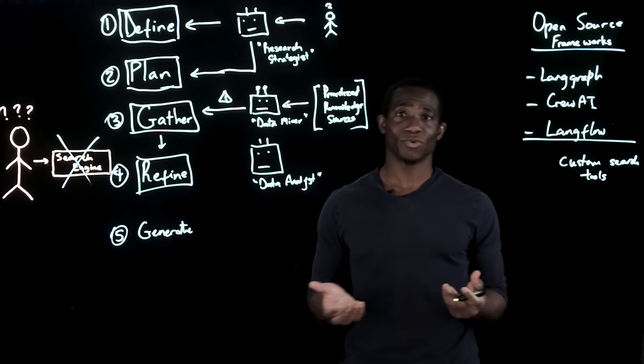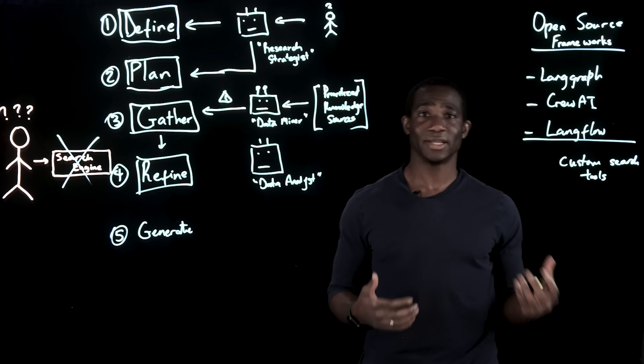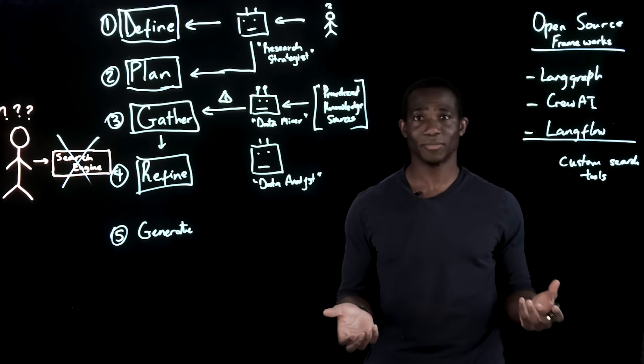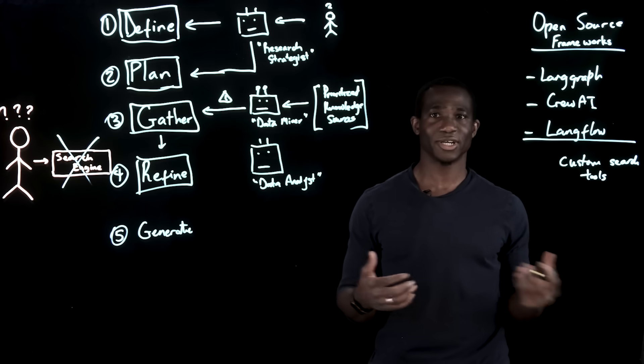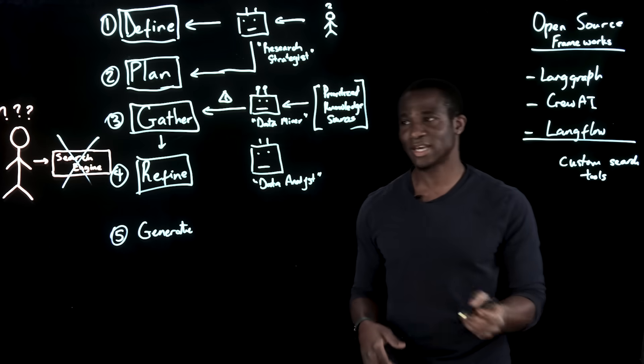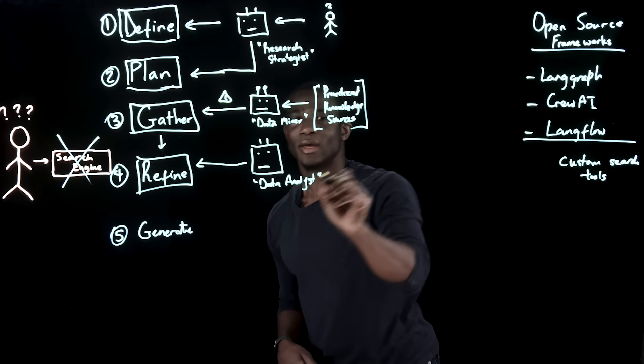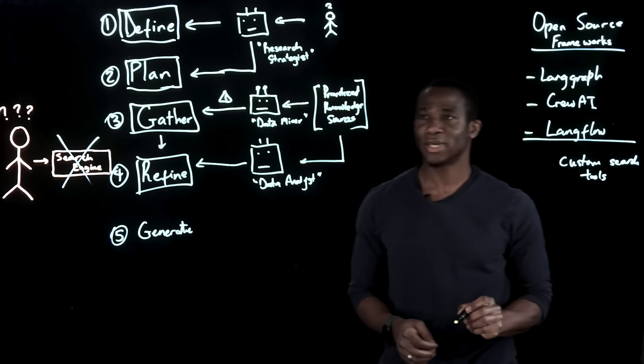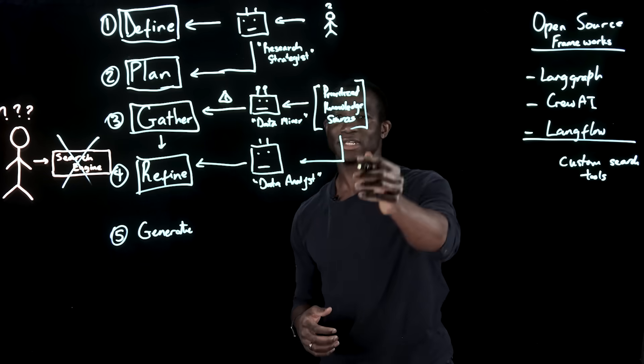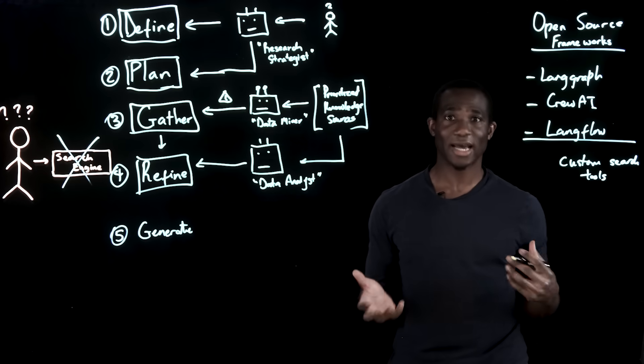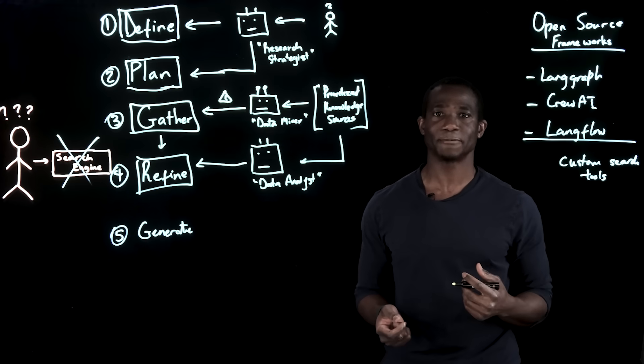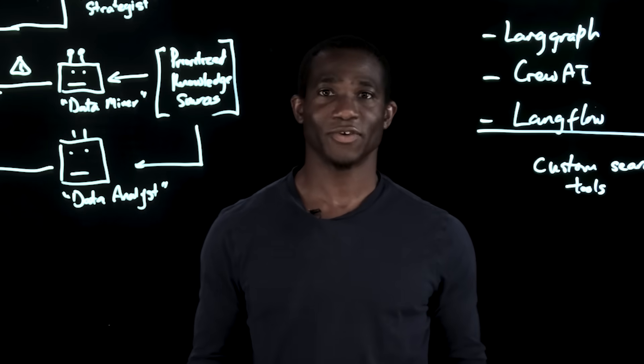This agent's role is to examine the data coming in to see are the sources credible? Are the insights contradictory? Does the data fit together? And does it contradict the prioritized knowledge sources that it was provided? Again, safety first.